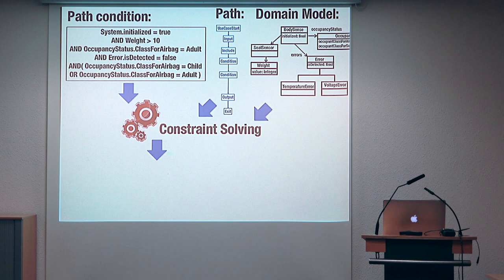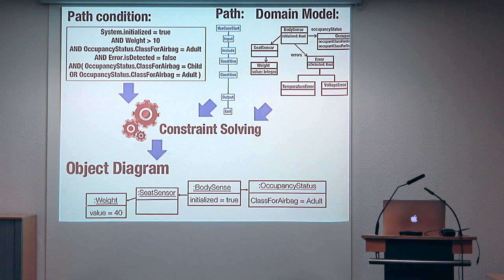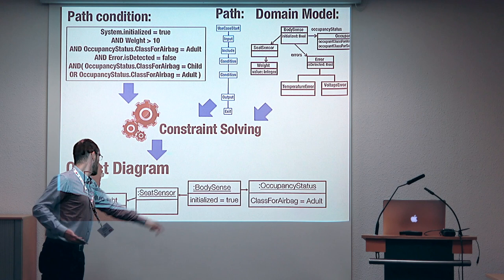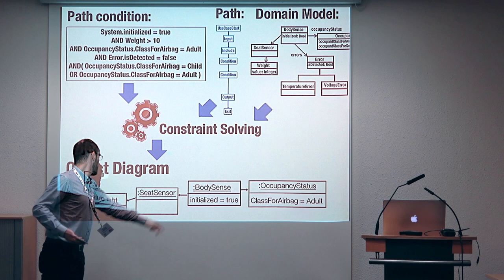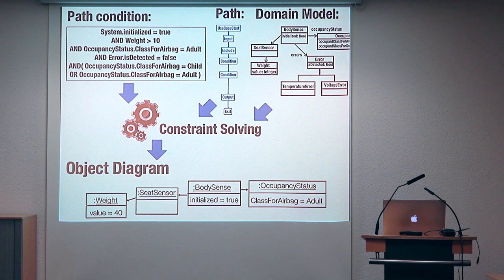With our constraint solver, what we do is generate a solution that satisfies that path condition. The solution is an instance of our domain model that satisfies the path condition. For example, here we have the main class of the system that has been initialized and we see that the weight is 40 and the occupancy status that is derived is 'adapted'. We have identified an instance of the domain model that satisfies the path condition, and this instance contains information about the concrete test inputs we wanted to send to test the system.